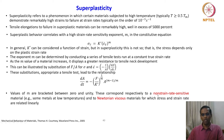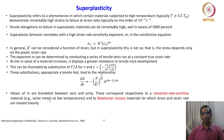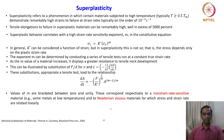These correspond respectively to a non-strain-rate-sensitive material — such as some metals at low temperature — to Newtonian viscous materials for which stress and strain rate are related linearly. Metals at low temperature will behave in a highly brittle manner, so strain rate sensitivity is 0. On the other hand, if m equals 1, then the material will behave like a Newtonian viscous material. So from one extreme to the other, m ranges from 0 to 1.